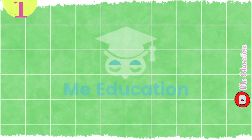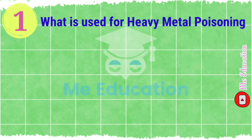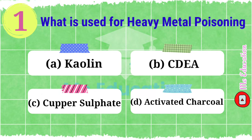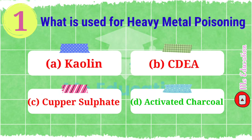Question number one on screen: what is used for heavy metal poisoning? Options: A) kaolin, B) EDTA, C) copper sulfate, D) activated charcoal. The right answer is option D, activated charcoal.